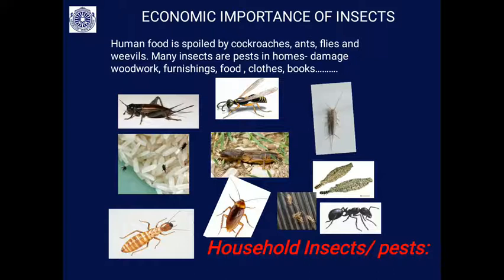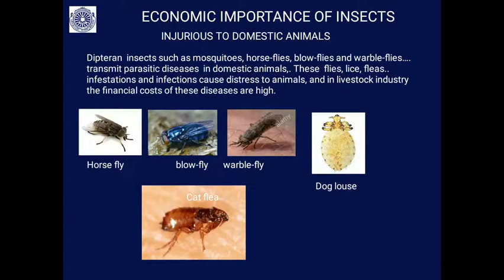Household pests include crickets, wasps, silverfish, rice weevils, termites, cockroaches, head lice, ants, and cloth moths. These damage woodwork, furnishings, food, clothes, books, and so on.